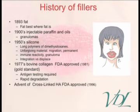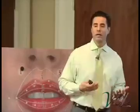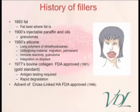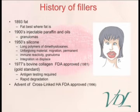In the 1900s, injectable paraffin oils had a high rate of granulomas, so they lost favor. In the 1950s, silicone — long polymers of dimethylsiloxanes — emerged. It is an unforgiving material with issues of migration, permanent placement, immune reactivity, and granulomas, as well as concerns around integration versus displacement.